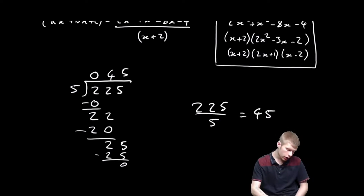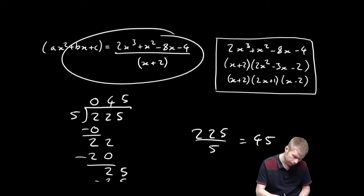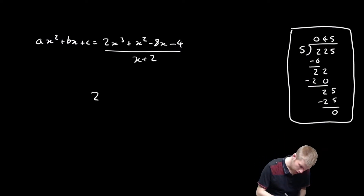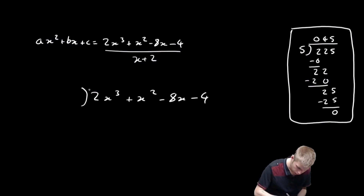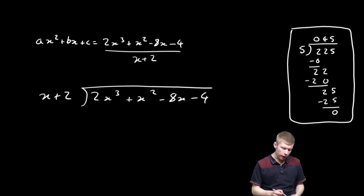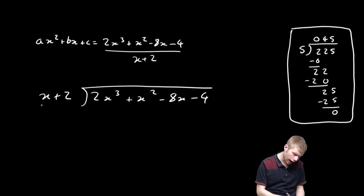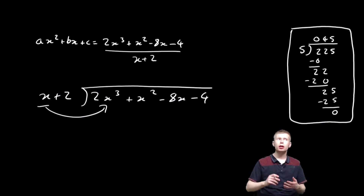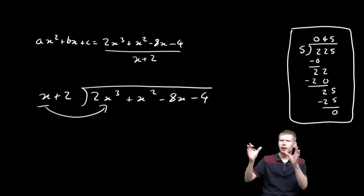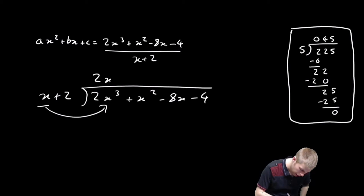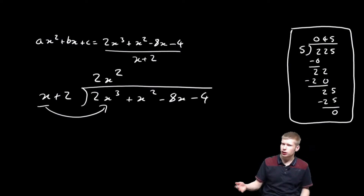Let's use that as inspiration to tackle this polynomial division. I've got 2x³ + x² − 8x − 4 divided by x + 2. I'm only going to look at the x term for now. How many times does x go into 2x³? It goes in 2x² times — x multiplied by 2x² gives 2x³.